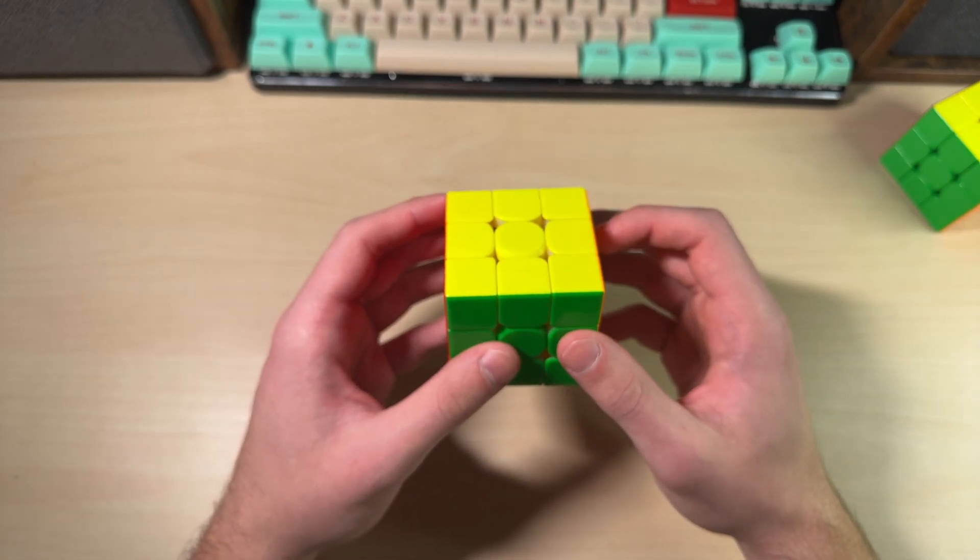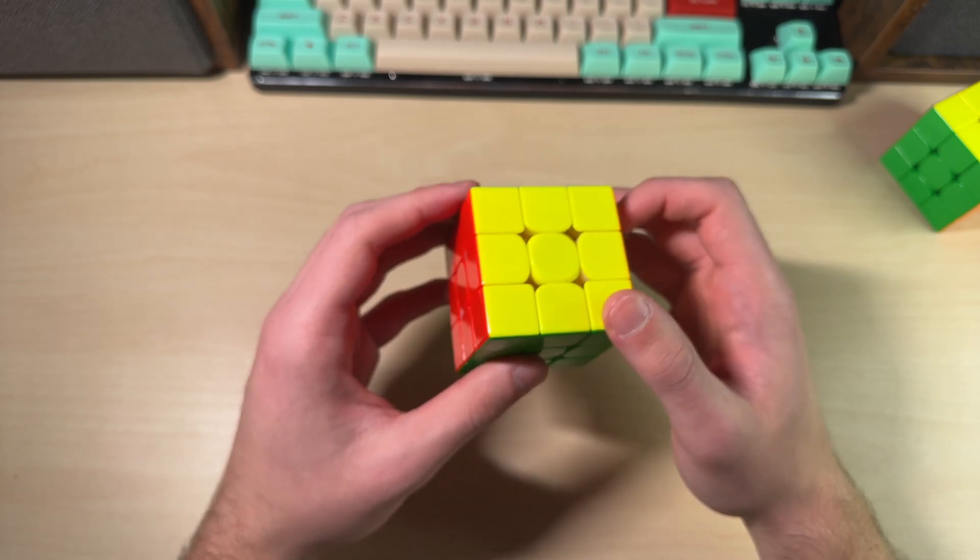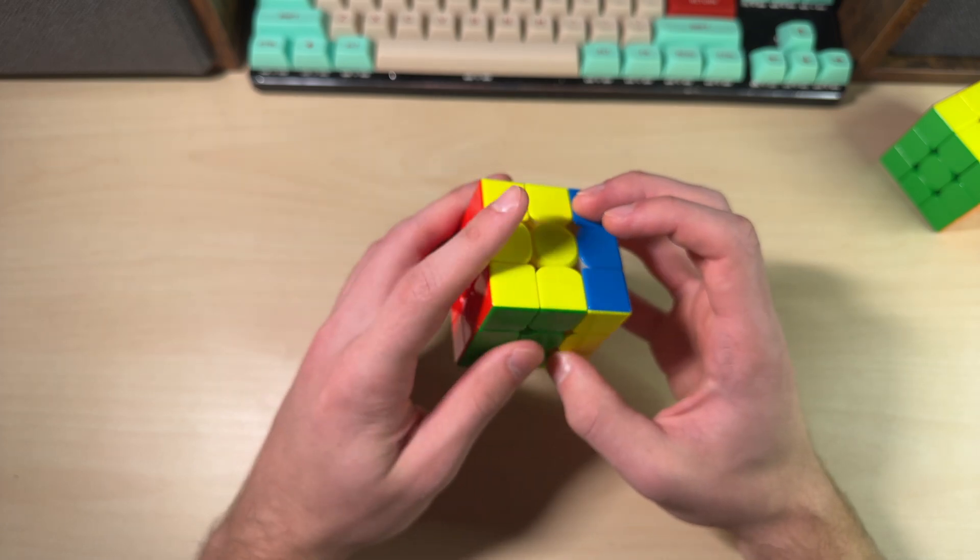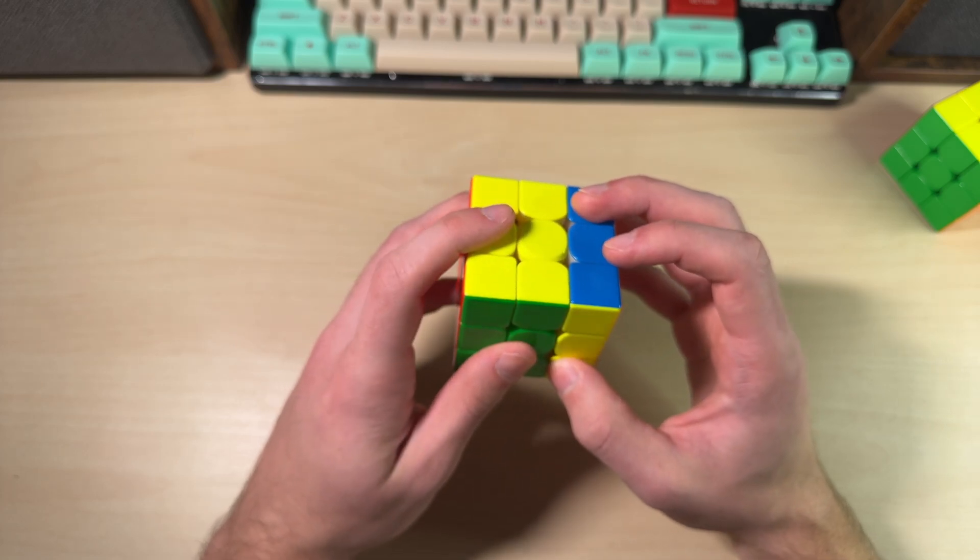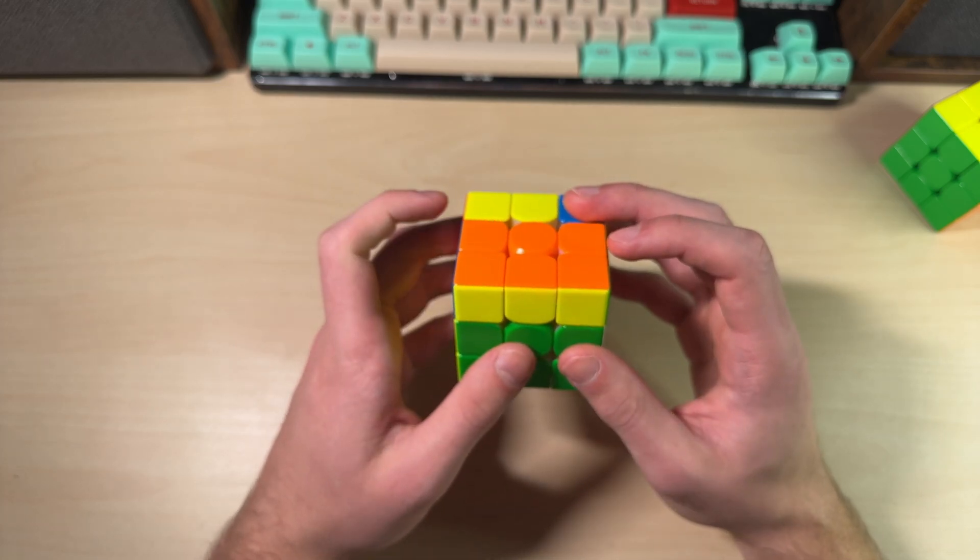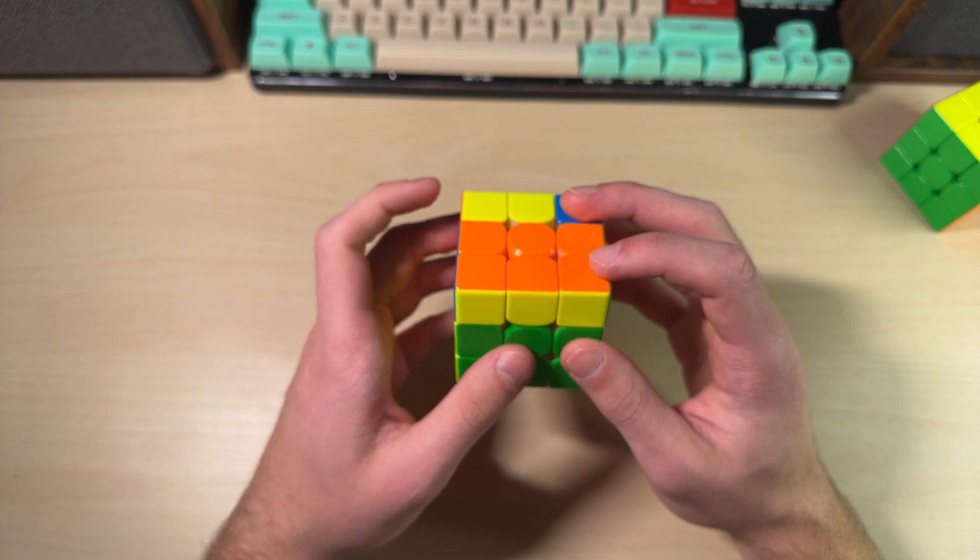So starting in home grip, bring your thumb up onto the top of this corner here. R', and then wide F', do it with your left index finger here. And this sets you up into a pretty neutral home grip to do the SUNE.